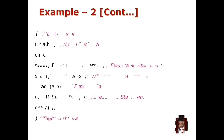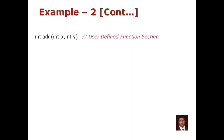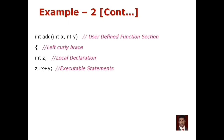Next is the user-defined function section. The user-defined function is defined, followed by a semicolon, and the left curly brace is opened. That is the local declaration section. You can declare any variable in this function — for example, an integer variable. If you have executable statements, you add them. The variables x and y are passed as parameters and the result is stored in a variable.